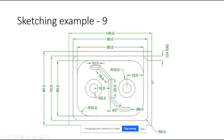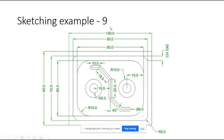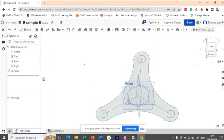This is a best example to use a center point rectangle, the slot, and the mirror command — all coming together in the same example. You can see the rectangle with a specific fillet radius of 15. There are multiple rectangles whose sizes are given, and all the rectangles share a common center point, so it is best to use the center point rectangle here.